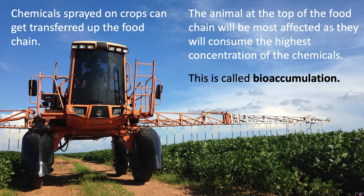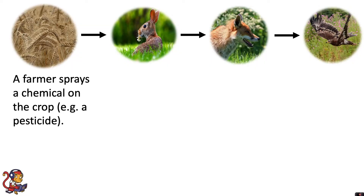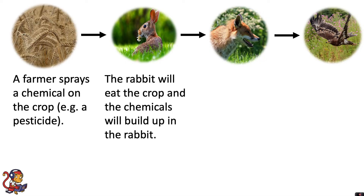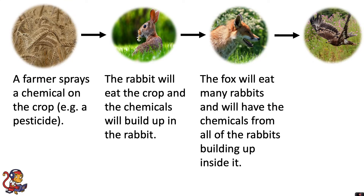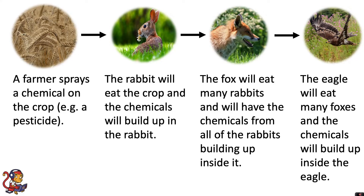This is called bioaccumulation, because 'bio' means living things and 'accumulation' means building up — so it's the idea that these chemicals build up in living organisms. A farmer sprays a chemical on the crop, for example a pesticide, and the rabbit will eat the crop and the chemicals will build up in the rabbit. The fox will eat many rabbits and will have the chemicals from all of those rabbits building up inside it. The eagle will eat many foxes and the chemicals will build up inside the eagle.